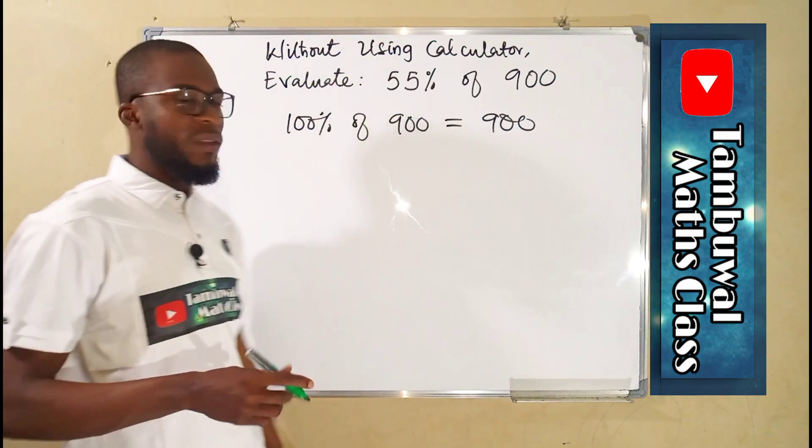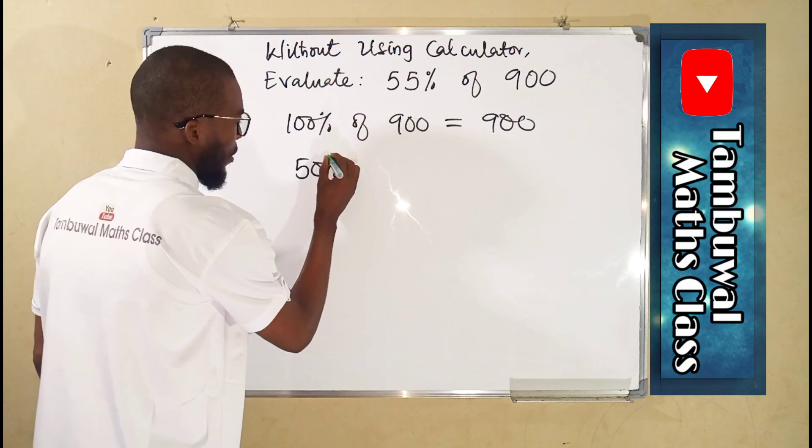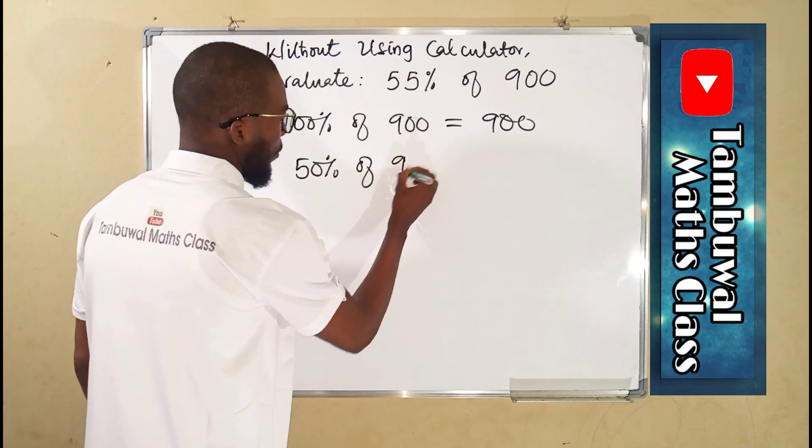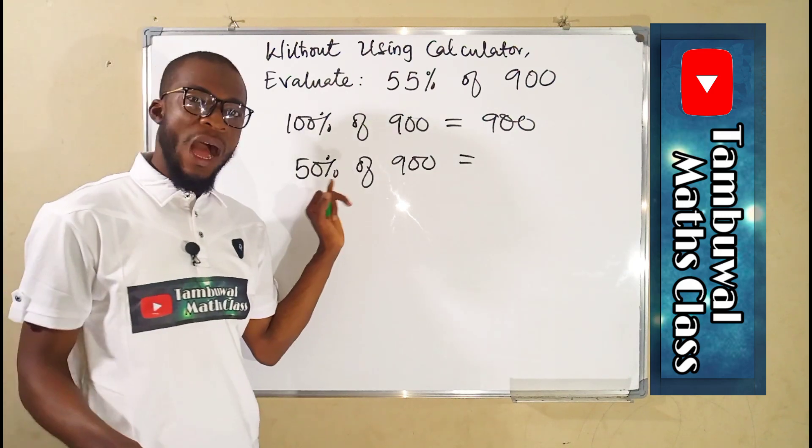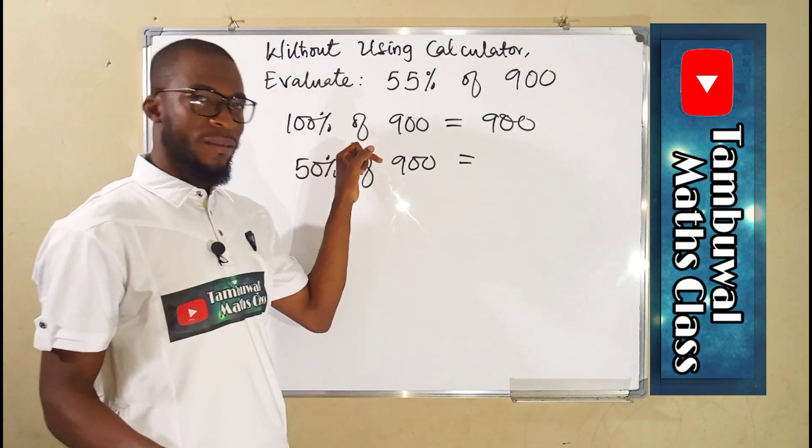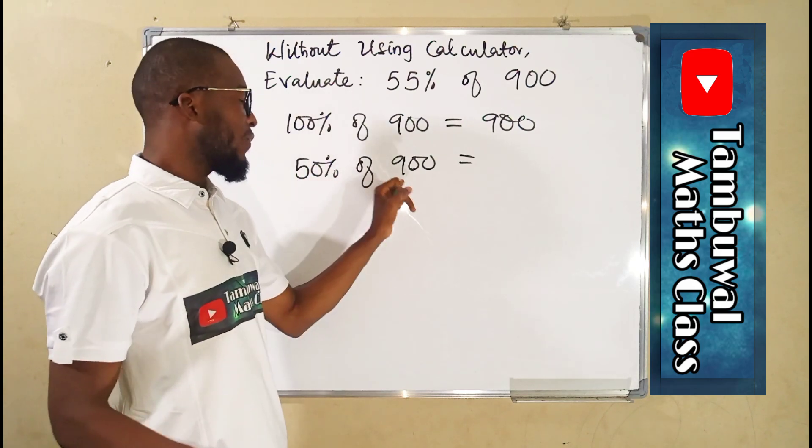So what is 50% of 900? Let's see. You know 50% is half of 100%. Therefore, 50% of 900 is just going to be half of 900, which is 450.